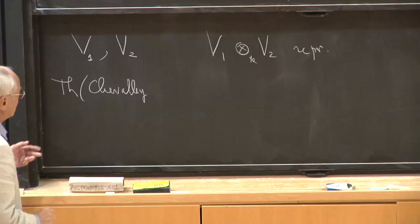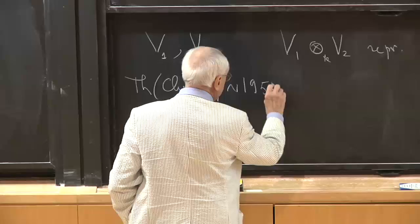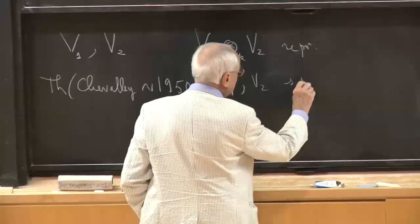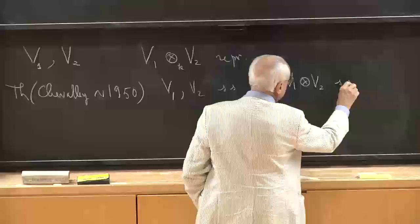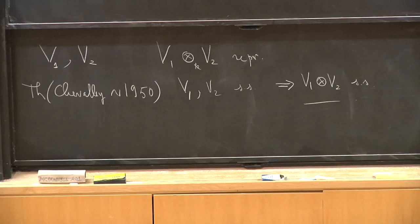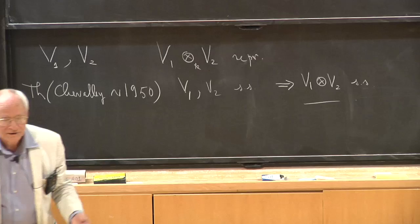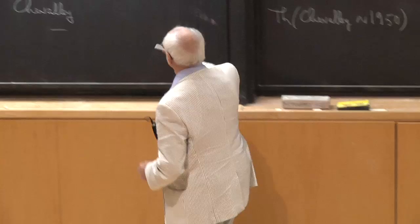The theorem says: V1 and V2 semi-simple implies V1 tensor V2 semi-simple. It looks like a very innocent theorem and it is trivial in a few cases — if V1 or V2 have dimension zero or one, it is trivial. If you have dimension two and you are clever enough, you can find a direct proof. But except for those cases, it's a bit mysterious. This is the first case I want to show of how you use linear algebraic groups.